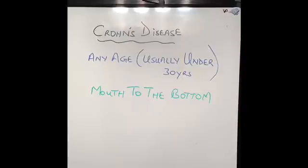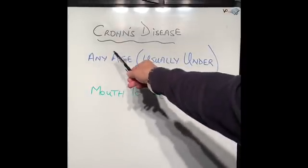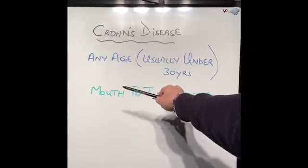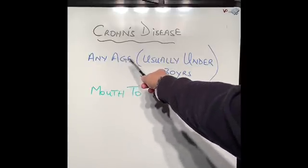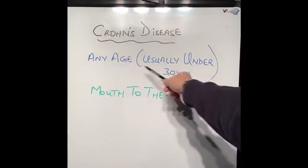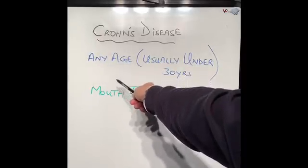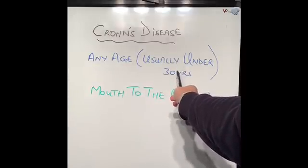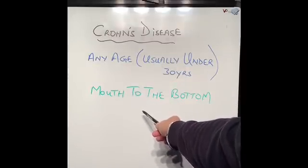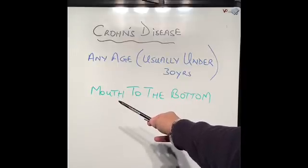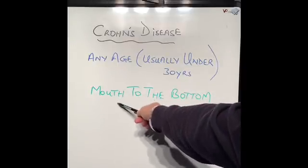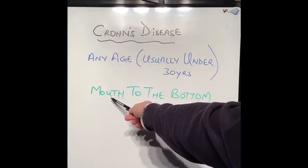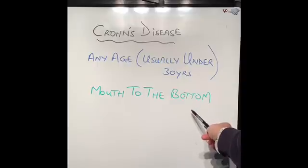The first thing to understand about Crohn's disease is what age of people does it affect. Obviously both males and females can be affected, but it usually affects people under the age of 30 years. However, it can affect anyone from very young children to very old people. The second thing to understand about Crohn's disease is that it affects any part of our digestive system, starting from our mouth to our bottom end, or the anus.